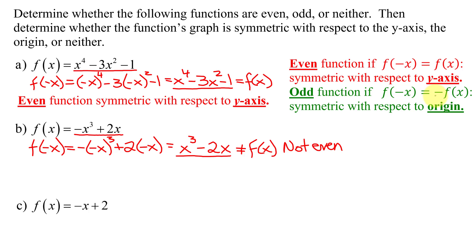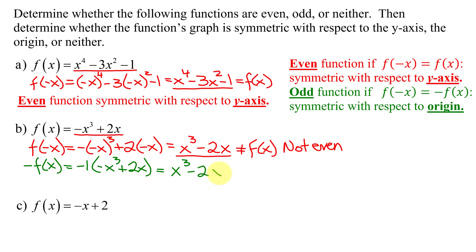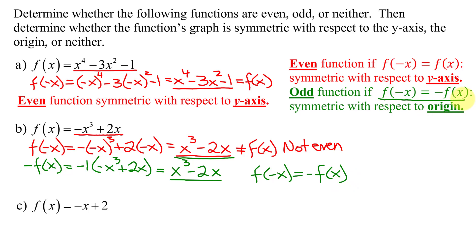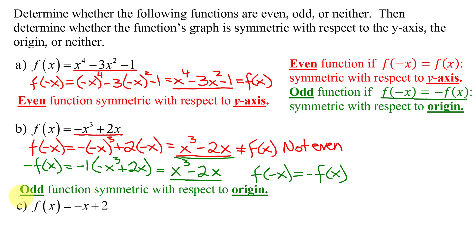To show it's odd, I need to know what negative f of x is, so I'm going to find the opposite of f of x by multiplying f of x by negative 1: negative 1 times negative x cubed plus 2x. Negative 1 times negative x cubed is positive x cubed. Negative 1 times 2x is negative 2x. Now is this expression the same as f of negative x? Yes, they're identical, so f of negative x equals the opposite of f of x. So my second example is an odd function, and its graph is symmetric with respect to the origin.